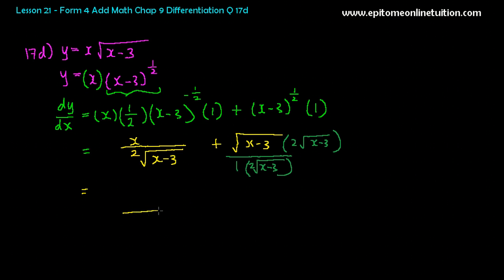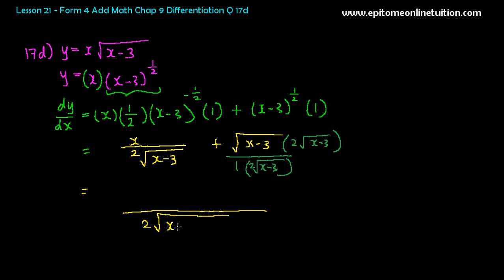The reason is because I want to make the denominator to be the same so that I can do. So multiply this with 2 root x minus 3. Okay? So now, in this case, the denominator is 2 root x minus 3. And the top would be x plus... So 2 root x minus 3 times root x minus 3. So no more square root. So that gives you 2 times (x minus 3). And that's it.